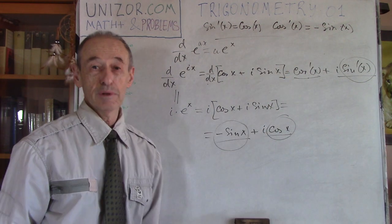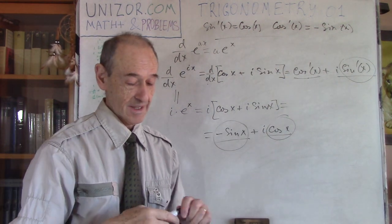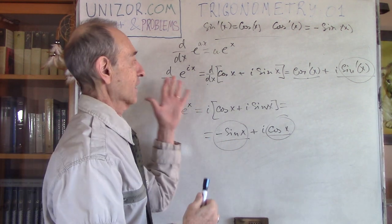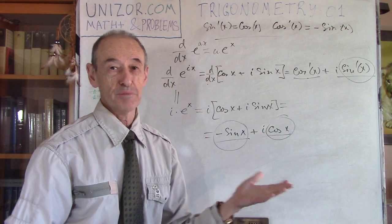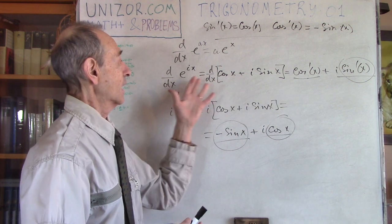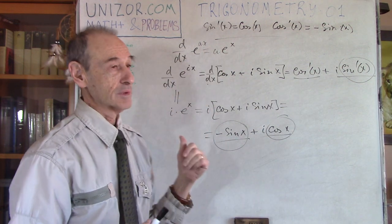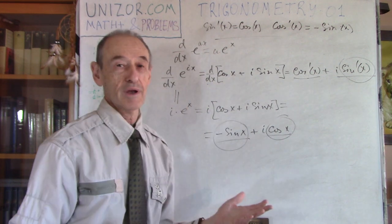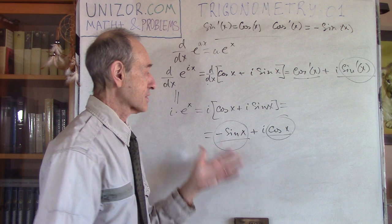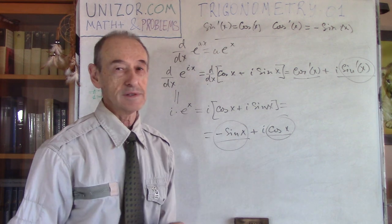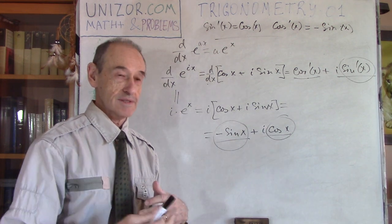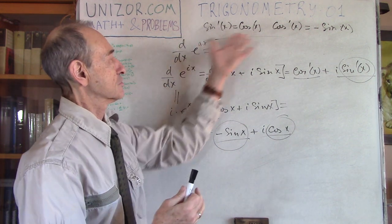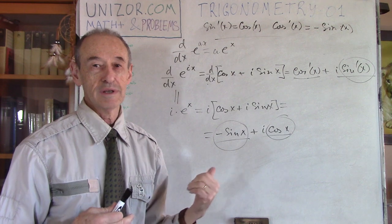That's it. Simple? Yes. But obviously this simplicity is based on the whole theory of how derivatives are supposed to behave, how to take the derivative of an exponential function, and the whole theory of complex numbers and how they multiply. So again, the same thing: the progress of theory allows us to do something extremely simple.